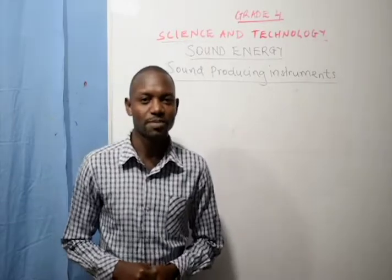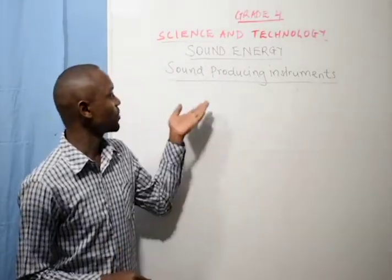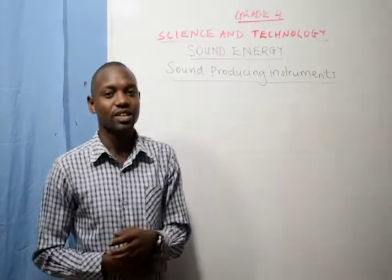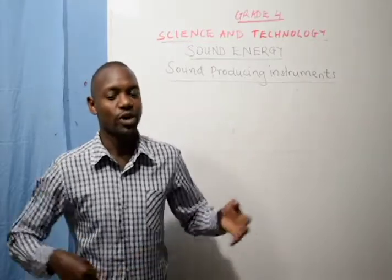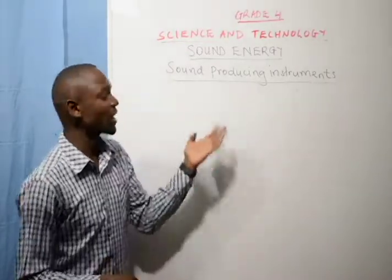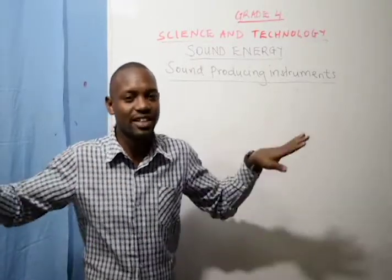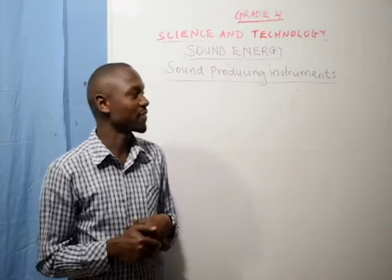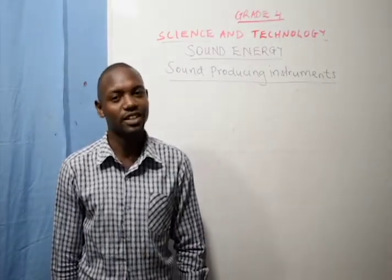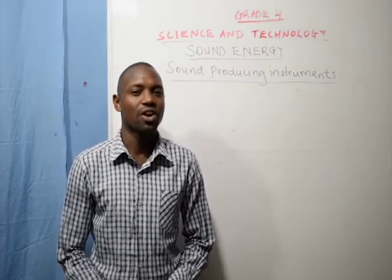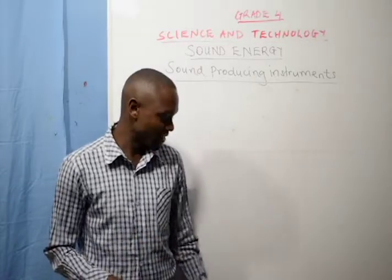Hello class 4. Welcome again to today's lesson. Today we are going to look at sound producing instruments. We looked at sound energy, we looked at some sources of sound. We said that sound is produced when objects vibrate, and that sound travels in all directions. Sound is dispersed in different places. We looked at reflection of sound, whereby sound can be reflected.